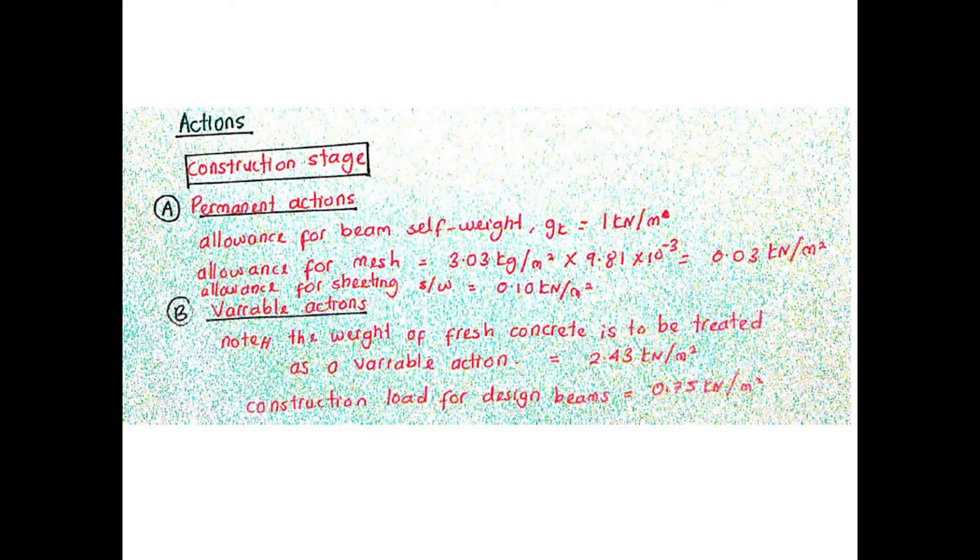For permanent actions, we must consider allowance for beam self-weight, mesh and sheeting profile. Meanwhile, for variable actions, we need to consider the weight of wet or fresh concrete and allowance for construction load for design beam.